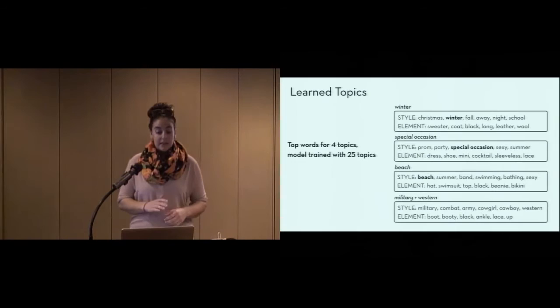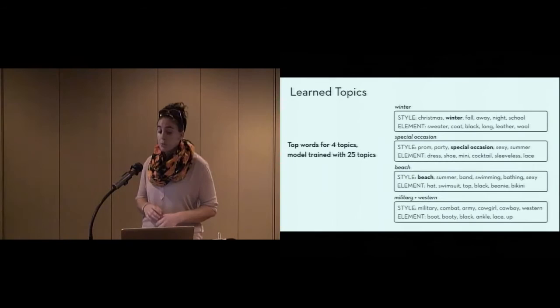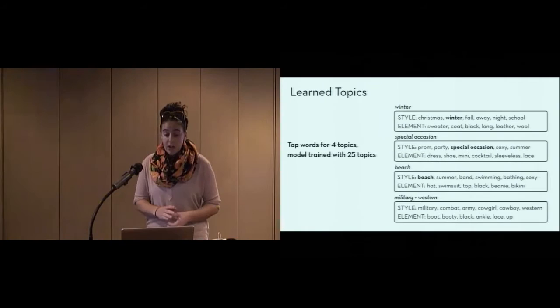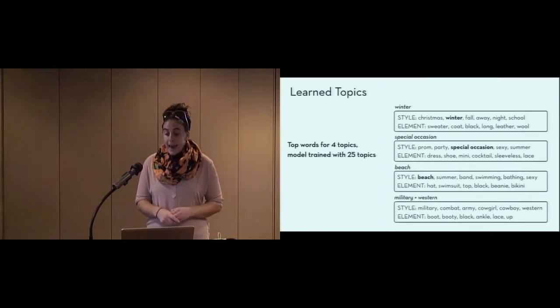The first is a winter topic, with style words like Christmas, winter, and fall, and element words like sweater, coat, black, long, leather, and wool. In the special occasion topic, we see style words like prom and party, and element words like dress, shoe, mini, and sleeveless. And in the beach topic, we see style words like beach, summer, and swimming, with element words like hat, swimsuit, and bikini. Now, many of these topics are quite coherent, with words that are clearly related. However, the fourth topic begins to illustrate the trade-off between coherence and concept granularity.